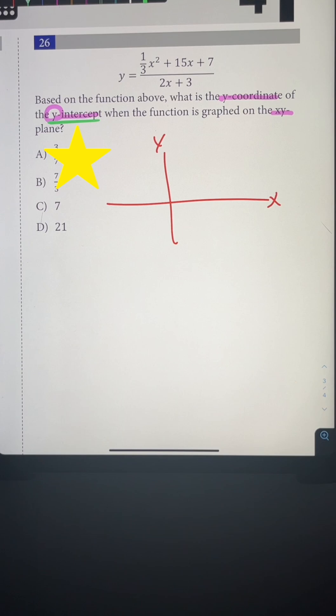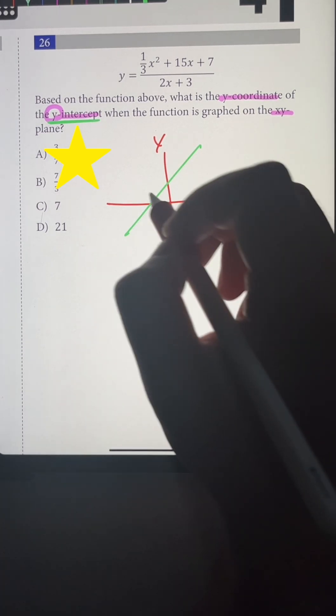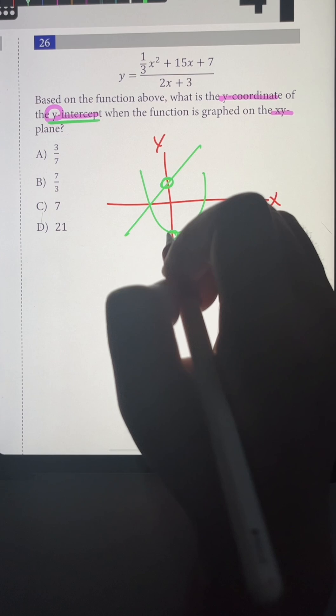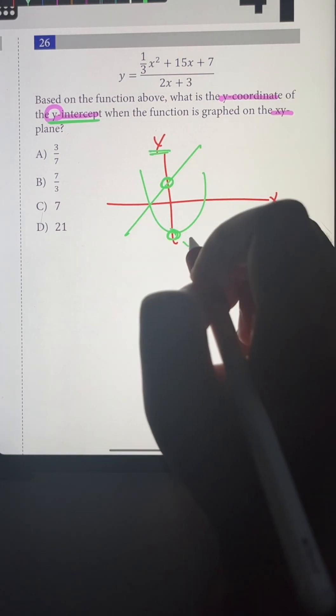But you do need to know what the y-intercept is. Whenever you're given some kind of graph, whether it be a line or parabola, wherever the graph intersects the y-axis is known as the y-intercept.